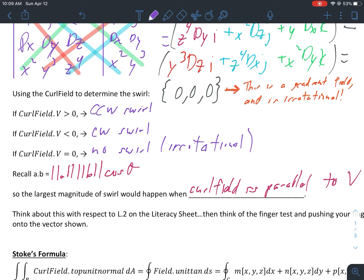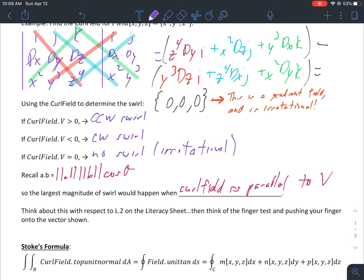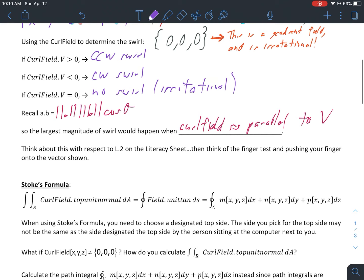I think there's a problem L2 on your literacy sheet that kind of has something to do with this - they call it the finger test. You push your finger into a vector and you can think about if your finger was there, what kind of swirl would it feel as a field swirled around your finger - would it be clockwise, counterclockwise, or neither?